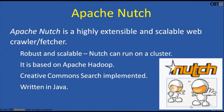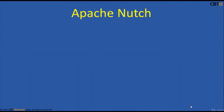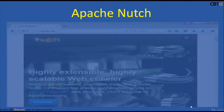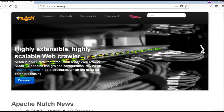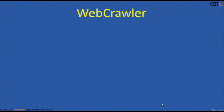Apache Nutch is a highly extensible and scalable web crawler. It is based on Apache Hadoop and can be used with Apache Solr and Elasticsearch. It is written in Java, robust and scalable, and can run on a cluster as well. Nutch originated with Doug Cutting and Mike Cafarella. Doug Cutting is the creator of both Lucene and Hadoop. Let us explore the Apache Nutch website for further information.